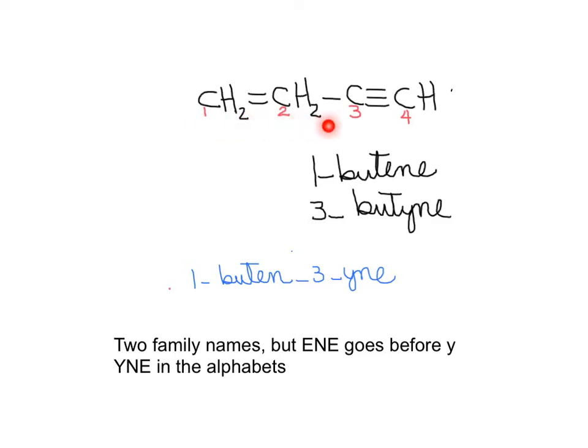Once we have found what is the longest hydrocarbon chain with the unsaturation, we need to find what are the positions for those bonds. In this case, we see that there is a multiple bond close to both of the ends of the hydrocarbon.